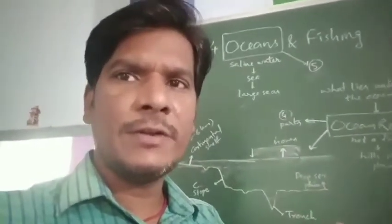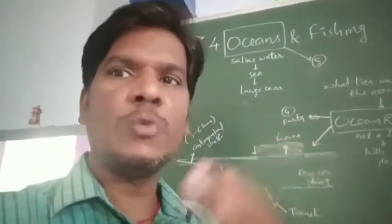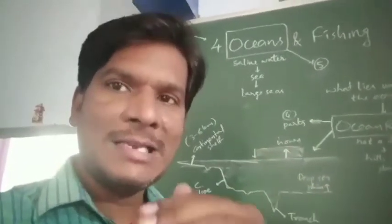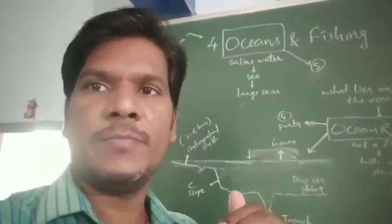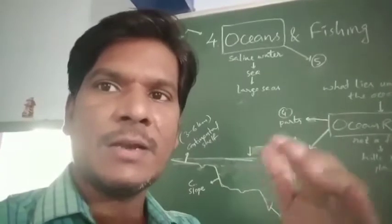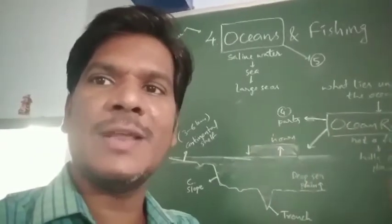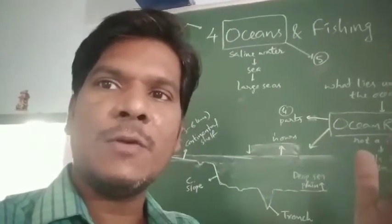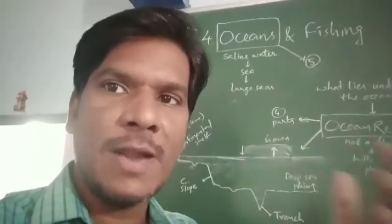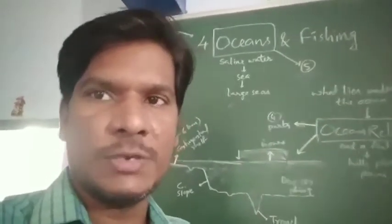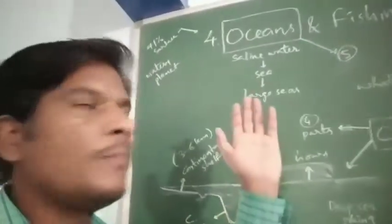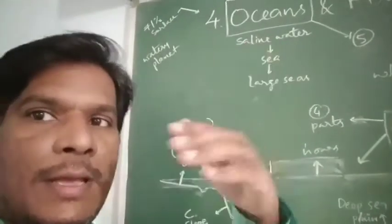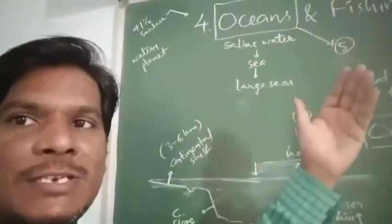The general differentiation between sea and ocean: seas are the extension of saline water, and a large sea is known as an ocean. So a saline water body in a large extension is called an ocean.